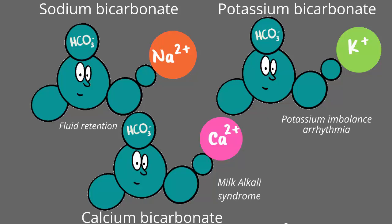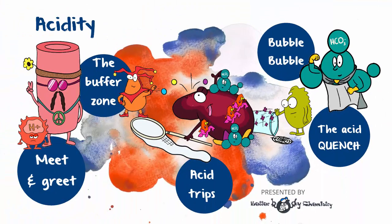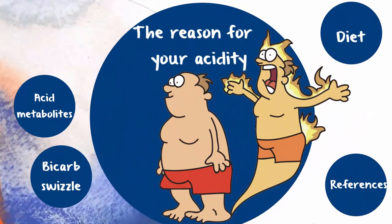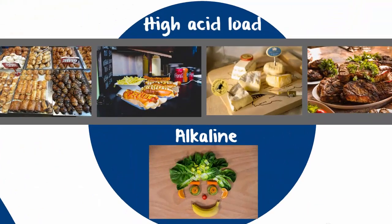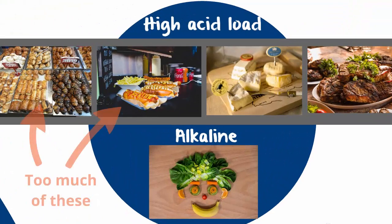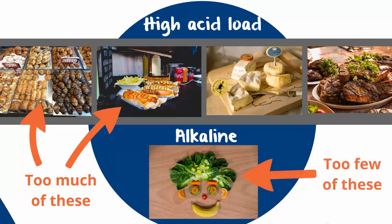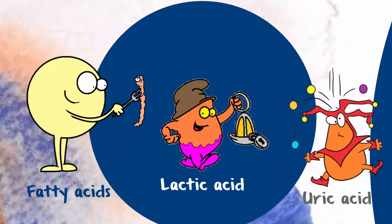So when all is said and done, it would serve you better to address the things that are putting strain on your buffering capacity, rather than artificially beefing up your buffering capacity. The acid is coming from a metabolic problem first and foremost — you may be eating too many acid-producing foods and not enough vegetables and fruit, but this is not causing the problem per se.